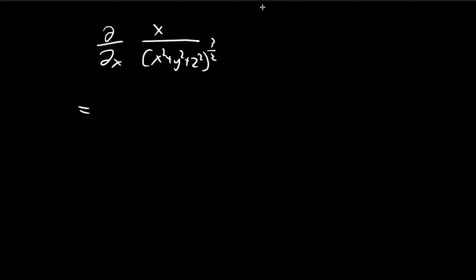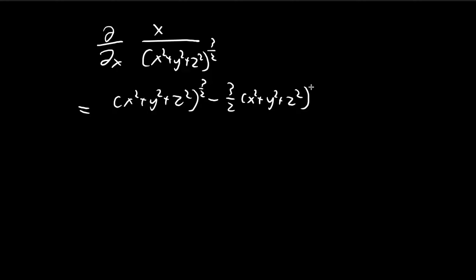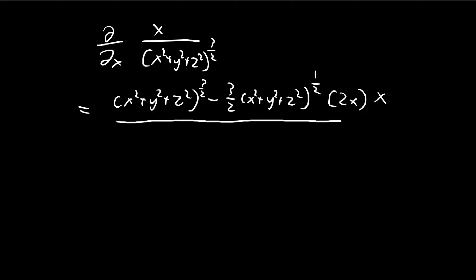To calculate this, we're going to use the quotient rule. The quotient rule tells us that first we differentiate the numerator, which equals 1, and multiply it by the denominator. Then we differentiate the denominator — here we have to use the chain rule, so after differentiating we get 2x — and multiply that by the numerator x. Then we take the square of the denominator.